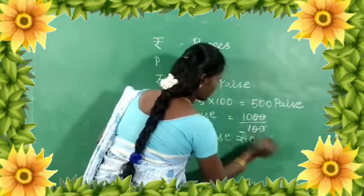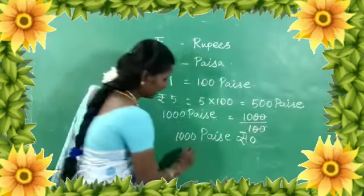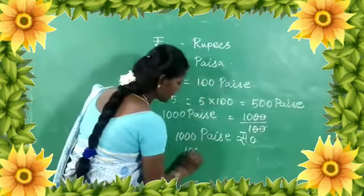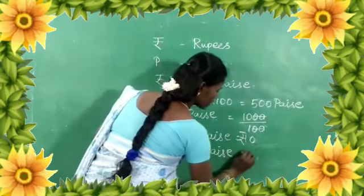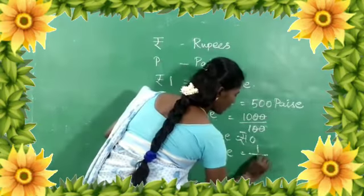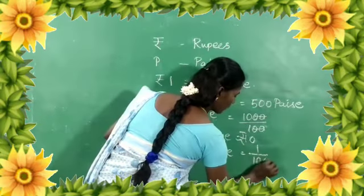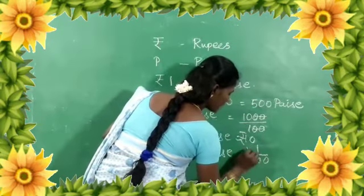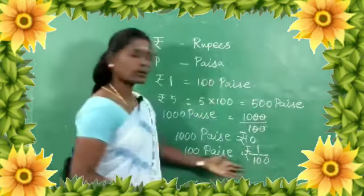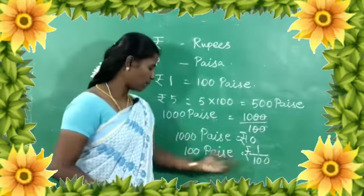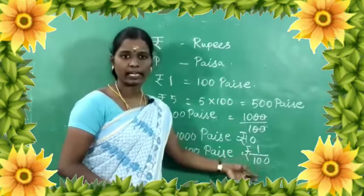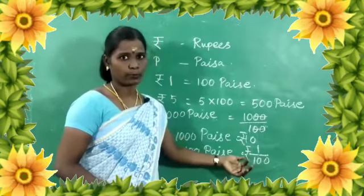This is 10 Rupees. 100 Paisa is equal to 1 Rupee. Now the topic is operations using money.